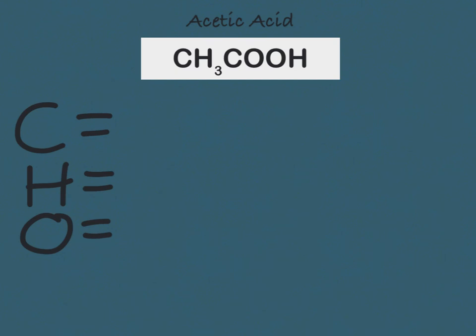To begin, we'll start by counting our carbon atoms, or the capital C's. In this formula there are going to be two carbon atoms, and we can tell this by counting the number of C's present.